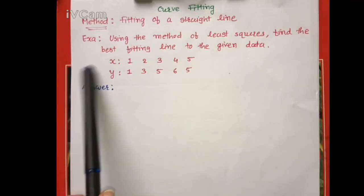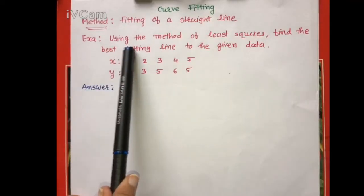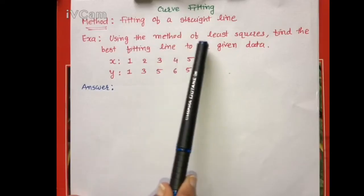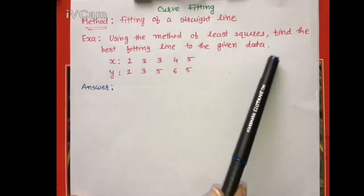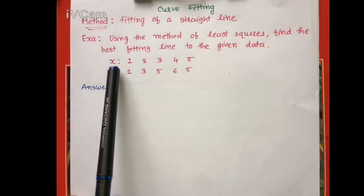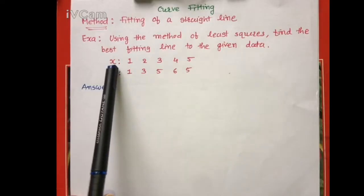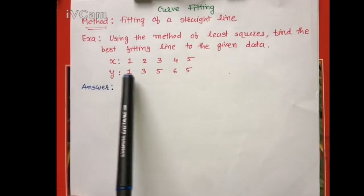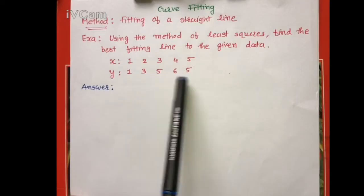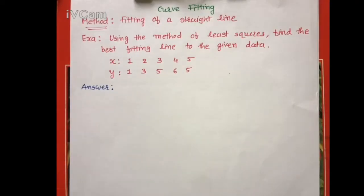The example is given as: using the method of least squares, find the best fitting line to the given data. The x data are given as 1, 2, 3, 4, 5 and the y data are given as 1, 3, 5, 6, 5. Here, which equation to be fit to the given data is not specified.